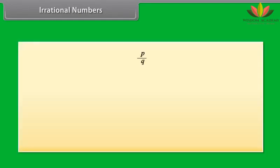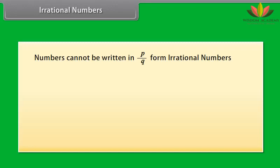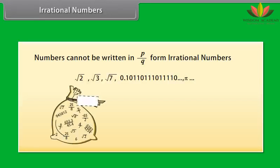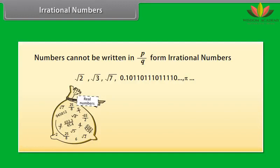Irrational numbers. There are numbers which cannot be written in the form P/Q. Those numbers are called irrational numbers. For example, √2, √3, √7, 0.10110111011110..., π, and so on. If we collect all the rational numbers and irrational numbers together, there will be no number left on the number line. We call this collection real numbers. Therefore, a real number is either rational or irrational.